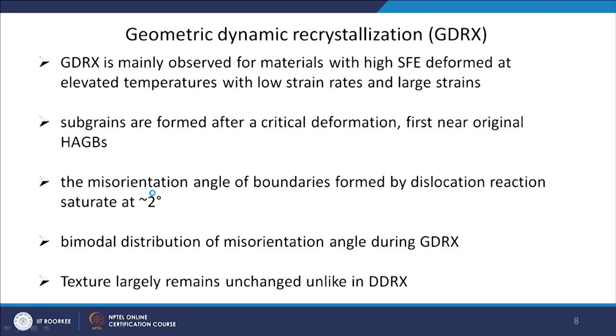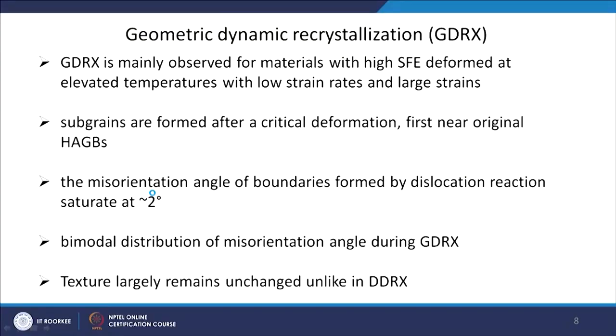The next type of dynamic recrystallization we have seen is discontinuous dynamic recrystallization and continuous dynamic recrystallization. This new one is called geometric dynamic recrystallization (GDRx). It is mainly observed for materials with again high stacking fault energy. Some people categorize GDRx within CDRx. It also occurs at elevated temperature, low strain rates, and large strains — conditions similar to CDRx. Only the mechanics of how recrystallization takes place is different from CDRx.